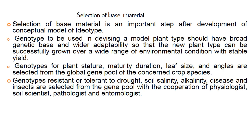The second step is selection of base material. Genotypes used in devising a model plant type should have a broad genetic base and wider adaptability so the new plant type can be successfully grown over a wide range of environmental conditions with stable yield. Genotypes for plant stature, maturity duration, leaf size, and leaf angles are selected from the global gene pool. Genotypes resistant or tolerant to drought, soil salinity, alkalinity, disease, and insects are selected with cooperation from physiologists, soil scientists, pathologists, and entomologists.